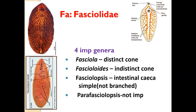Fascioloides has an indistinct cone and anterior parallel borders. The third genus is Fasciolopsis, which has simple intestinal caeca, not as branched as in the case of Fasciola. The fourth genus is Parafasciolopsis.